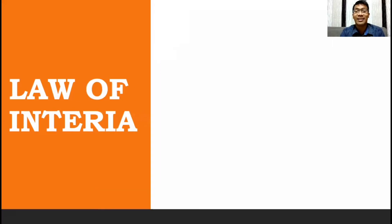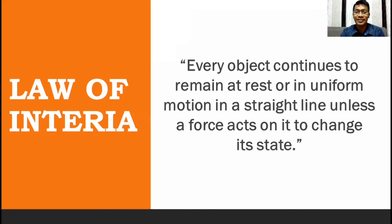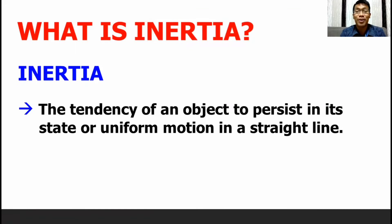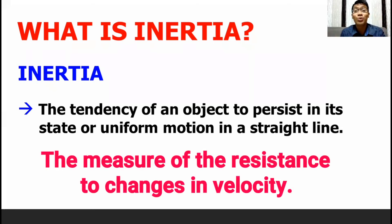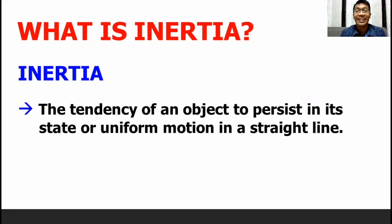This time, let us define the Law of Inertia. According to Newton, every object continues to remain at rest or in uniform motion in a straight line unless a force acts on it to change its state. For us to understand Newton's statement, let us define first what inertia is. Inertia is the tendency of an object to persist in its state of rest or uniform motion in a straight line. In other references, inertia is described as the measure of the resistance to changes in velocity.